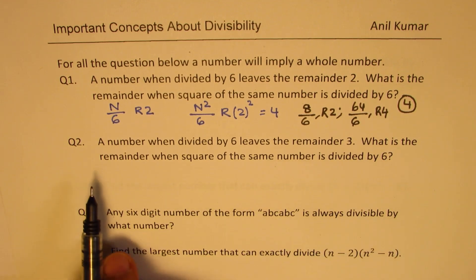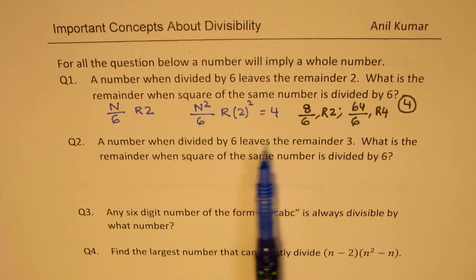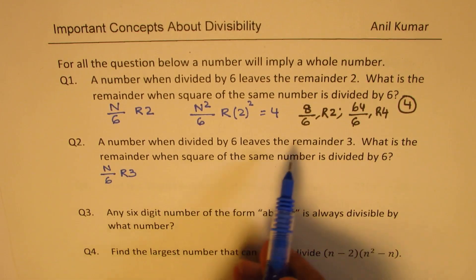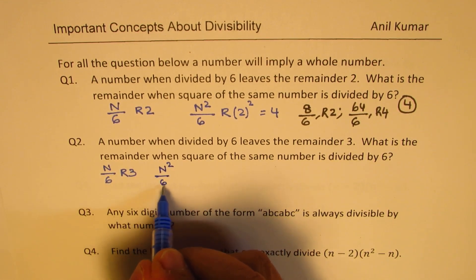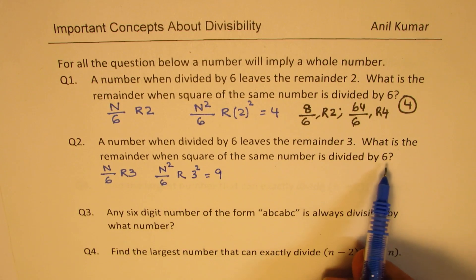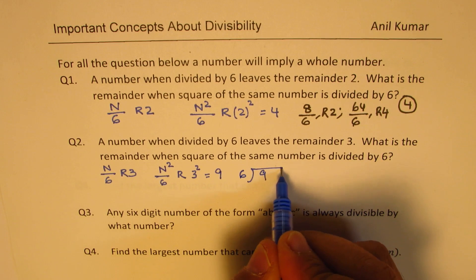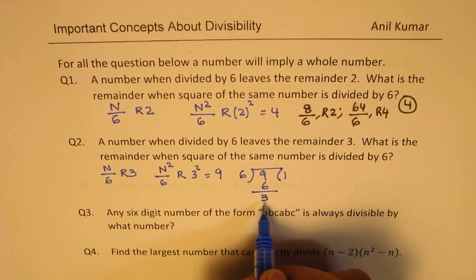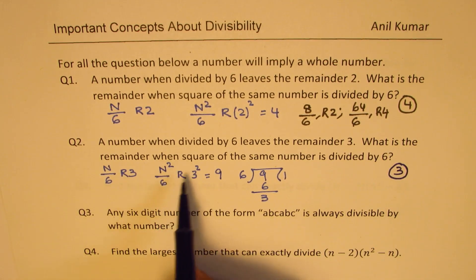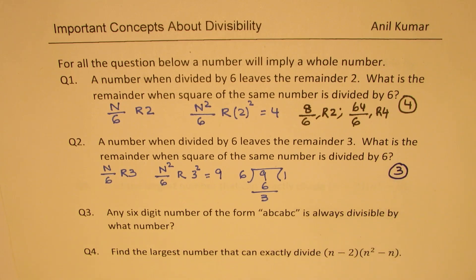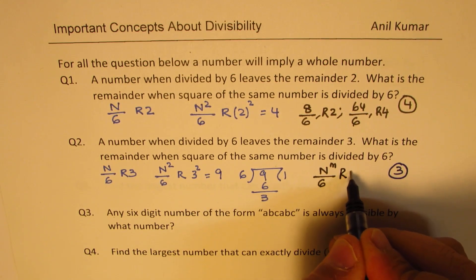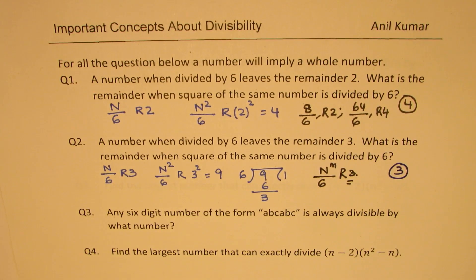Question number 2: the number divided by 6 leaves remainder 3. The remainder when the square is divided by 6 should be 3² = 9. But 9 is more than 6, so divide 9 by 6 — it goes once with remainder 3. So the answer is again 3. Interestingly, for remainder 3 with divisor 6, any power n^m divided by 6 will also give remainder 3.